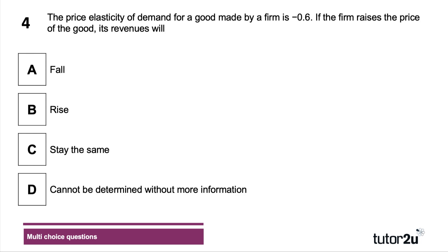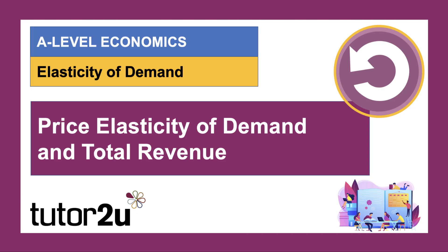Question four: the price elasticity of demand for a good made by a firm is minus 0.6. If the firm increases the price, what will happen to its revenues? This should be fairly straightforward — elasticity is low at minus 0.6, meaning demand is price inelastic. If prices go up, revenues will rise because the fall in demand is less than the percentage change in price.